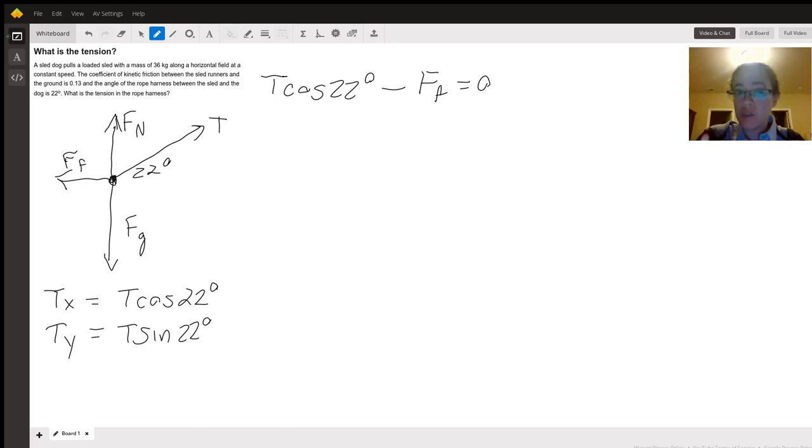Let's do the same for the y direction. This time we have T sine 22° plus the normal force minus F_g equals zero. Now our goal is to solve this system of equations for tension.